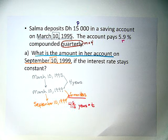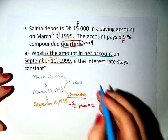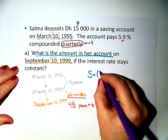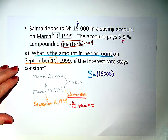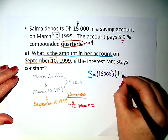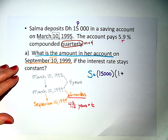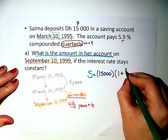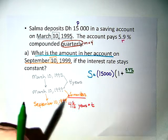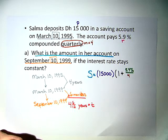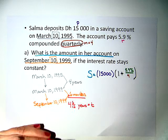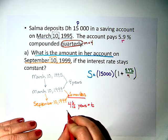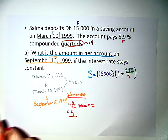We will start by using the compound interest formula. The formula is S equals the principal 15,000, times 1 plus — now instead of I, we need to take the rate and divide by 4 — so the rate is 5.9% divided by M, which is 4, and this is going to be raised to the time multiplied by 4: that is 4 and 6 twelfths times 4.